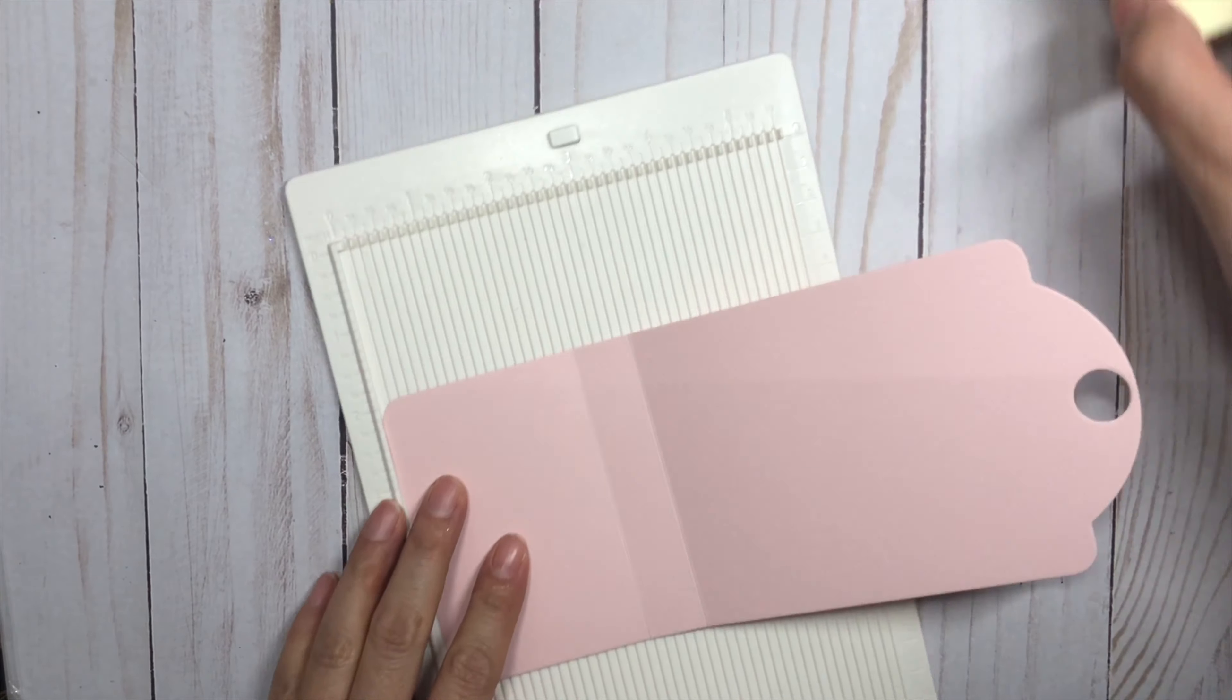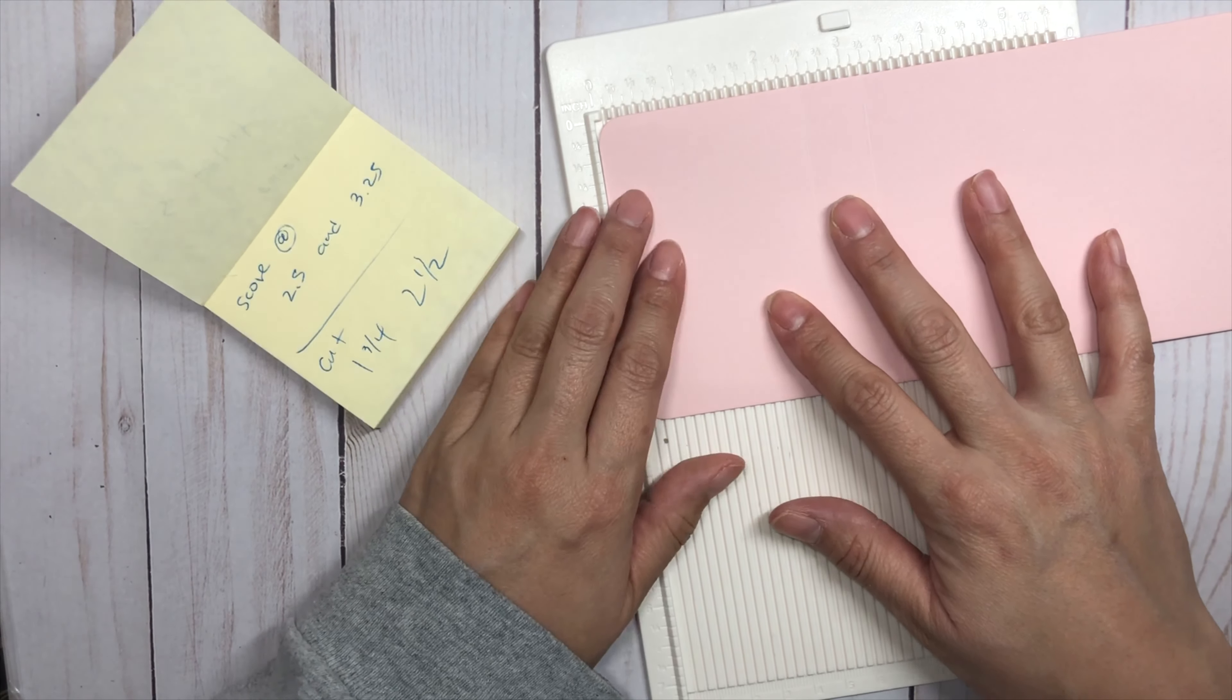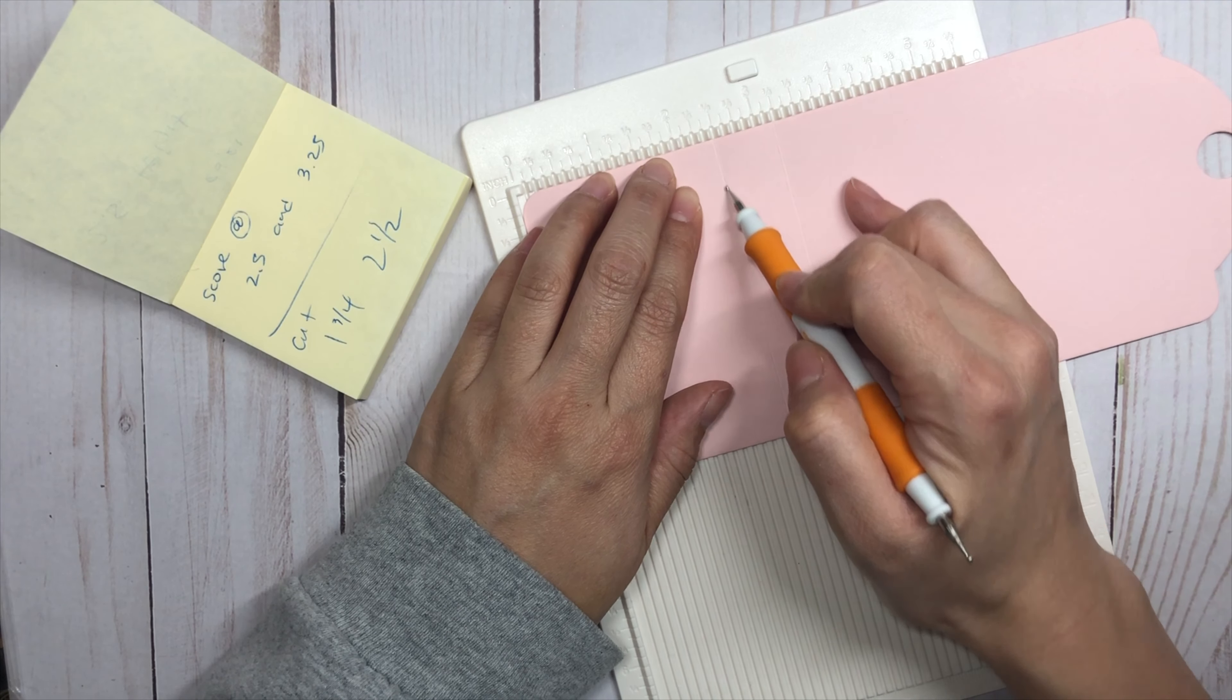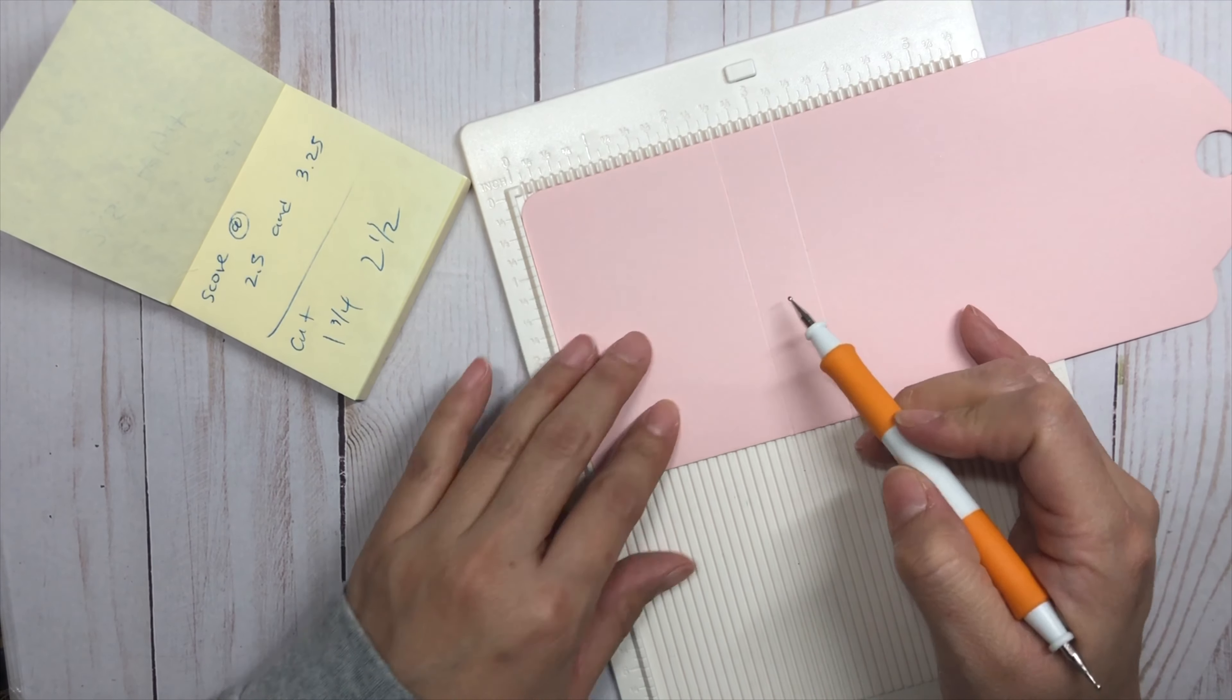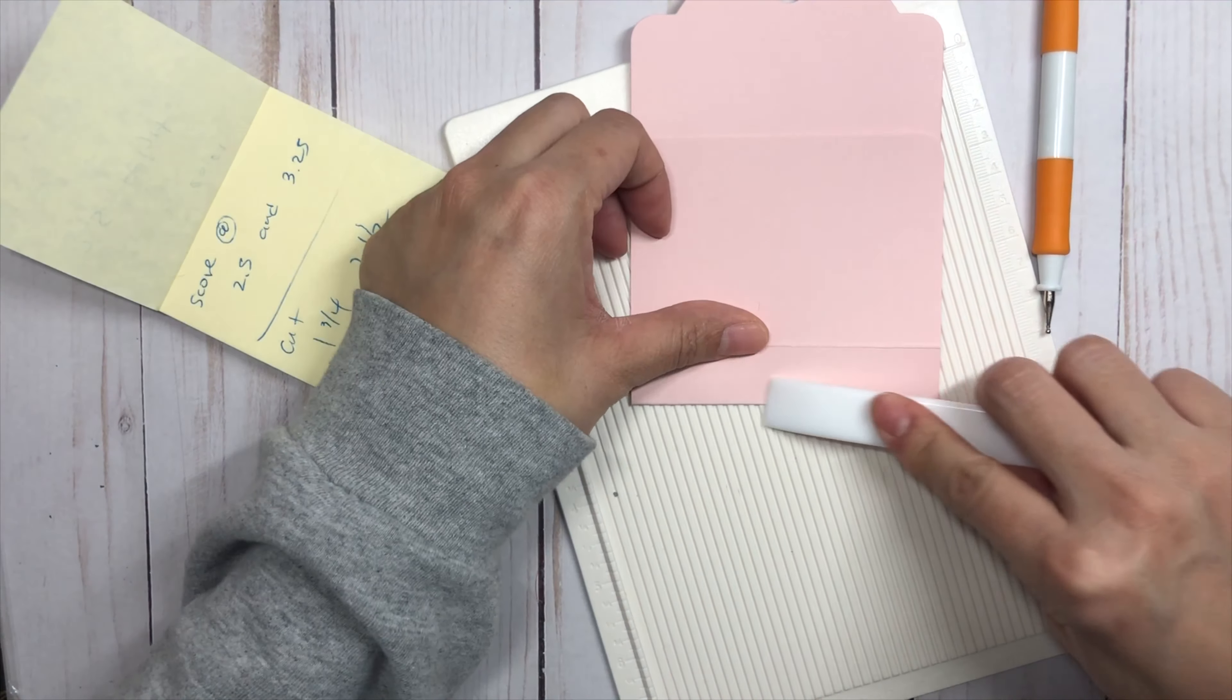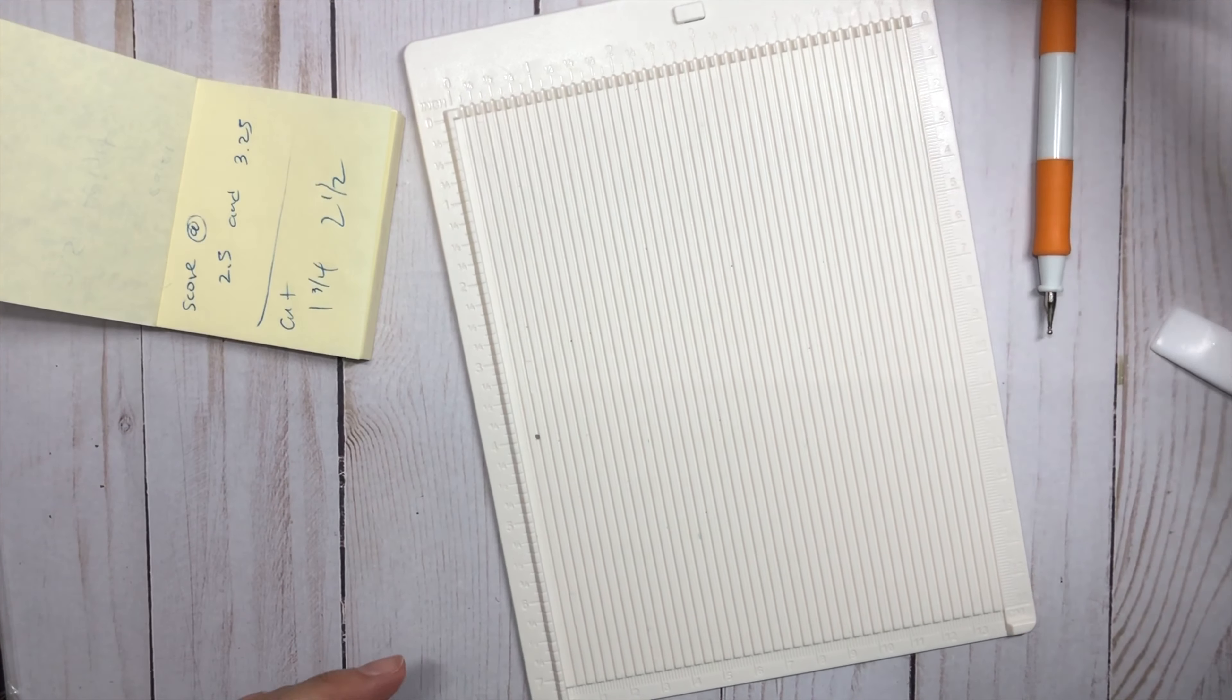So we will take the flat side of the tag and we will score at two and a half and three and a quarter. So there will be three-fourths of an inch in between for the tie. Okay, so that's the beginning of the base.